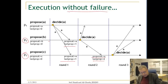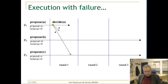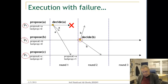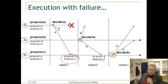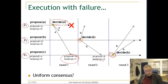Now let us look at an execution with failure. P1 decides on A and then fails. This proposal is adopted by P3. P2 detects the failed node, moves to round 2, and decides on B. P2's proposal has a higher proposal number so it overrides the earlier one. P2 in round 2 decides on B, and P3 in round 3 also decides on B, while P1 had already decided on A before failing. Clearly this is not uniform consensus. We stop at this point. Thank you.